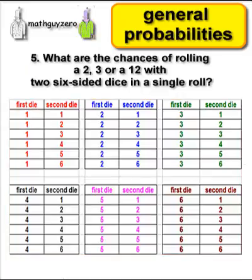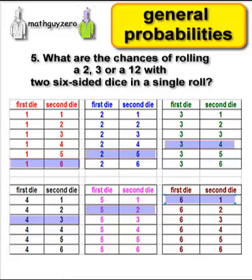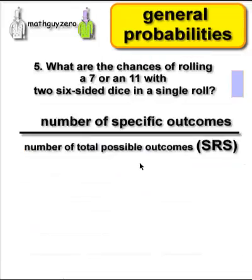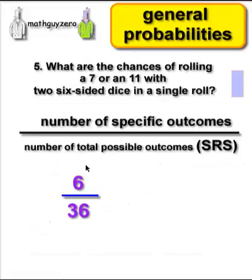Your first one, you can have a 1 and a 6, or a 2 and a 5. These are all the different ways you can make a 7. So that's 1, 2, 3, 4, 5, 6 — and so to make a 7, there are 6 ways to get 7 out of 36.